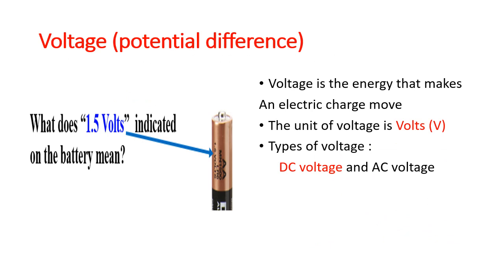Voltage or potential difference. Look at the battery in the figure. You can see a nomenclature 1.5 volts. What does 1.5 volt indicated on the battery mean? It means voltage. Voltage is the energy that makes an electric charge move.